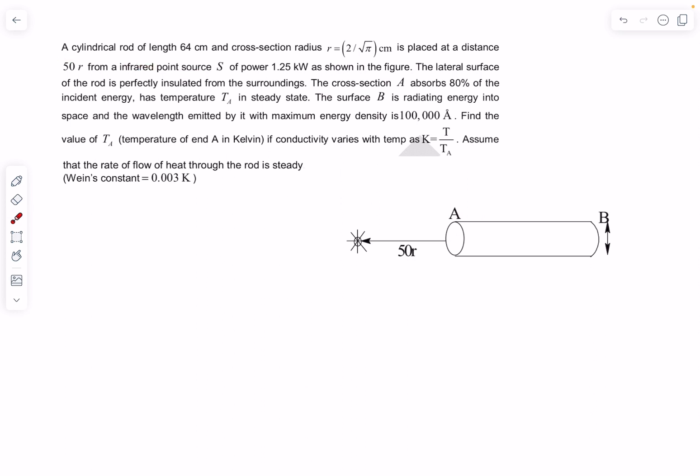We have a cylindrical rod that is placed at a distance of 50R from an infrared point source whose power is given. So we have a light source over here which is kept at a distance of 50R, and R is the radius. So it's very far away from the cylinder.